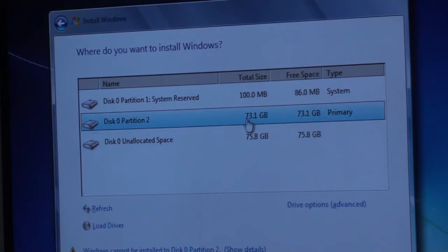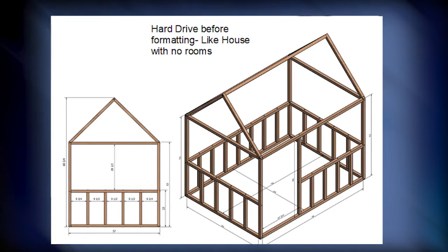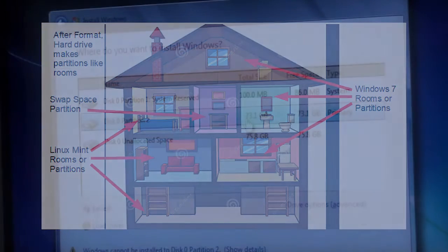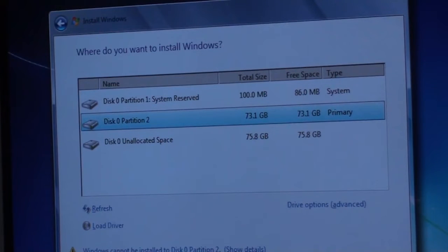Think of a partition on a hard drive like a room in a house. A hard drive with no partitions is like a house with no rooms. When you start partitioning it, it's like creating different rooms in the house — some rooms for Windows, some for Linux, some for swap space. The hard drive is basically the house and you're splitting it up into usable spaces.